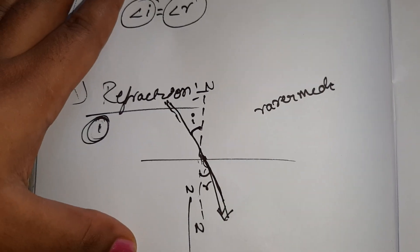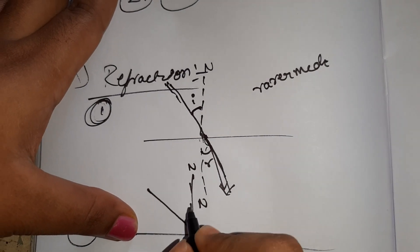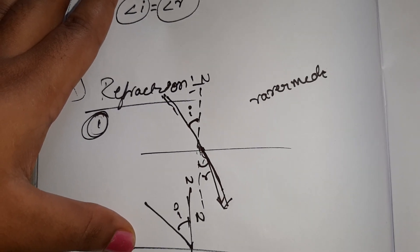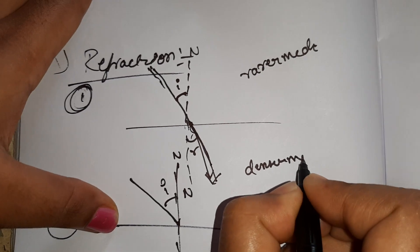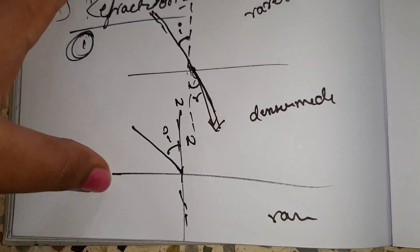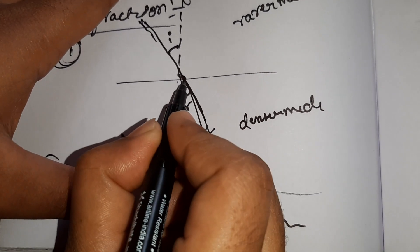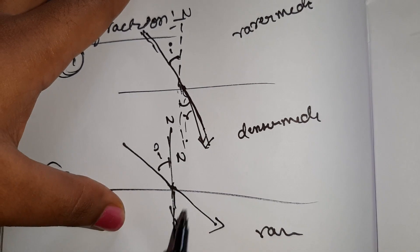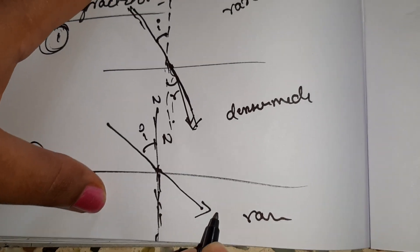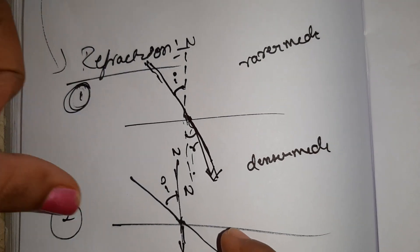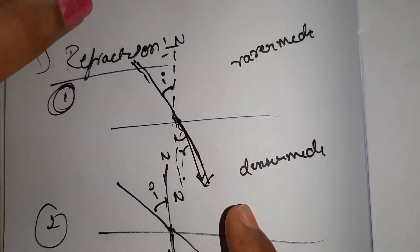This is the incident ray. This is the angle of refraction, and this is the normal. These two laws are the laws of refraction. So this covers reflection and refraction.